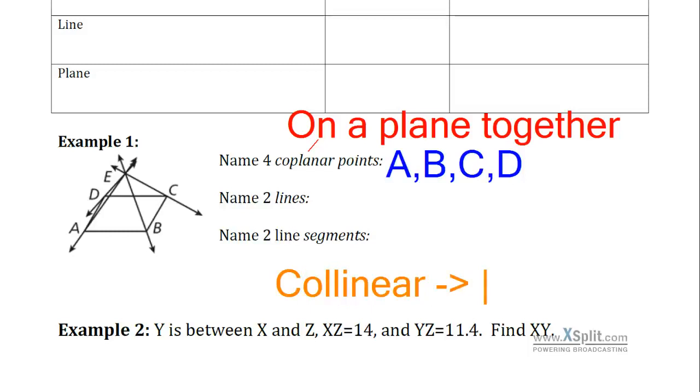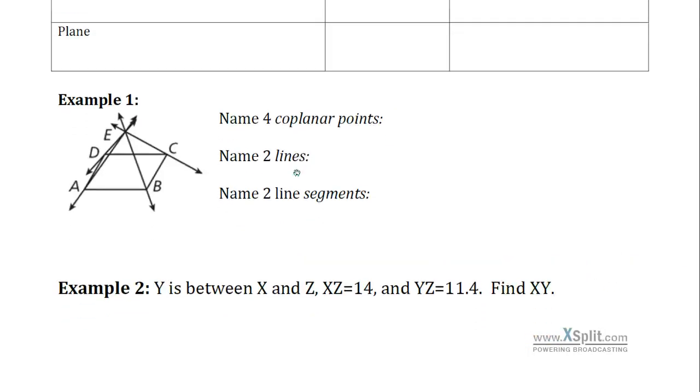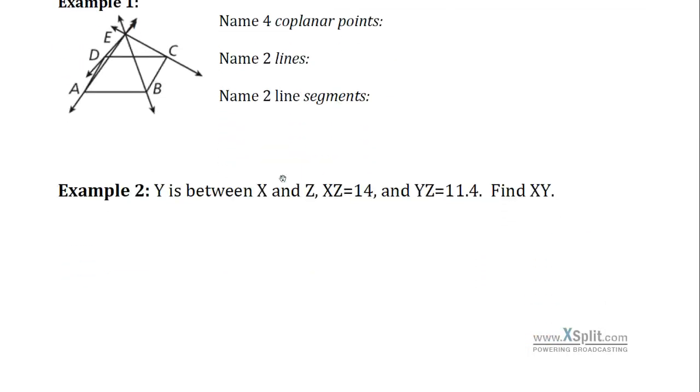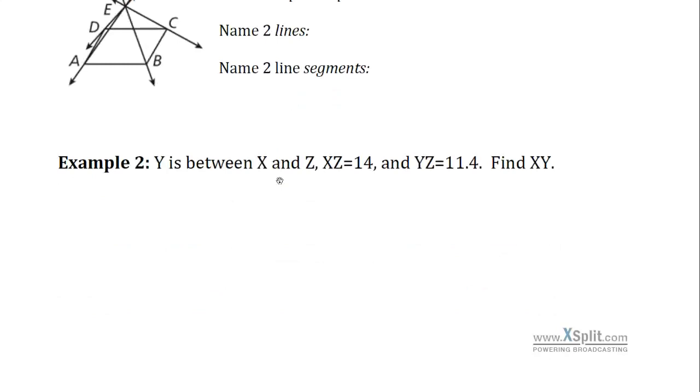Collinear, if you want to guess here, co again together. I bet you can guess what linear means. Line. So collinear is going to be on the same line. Let's get a couple examples of how we can use this with some arithmetic and some algebra.